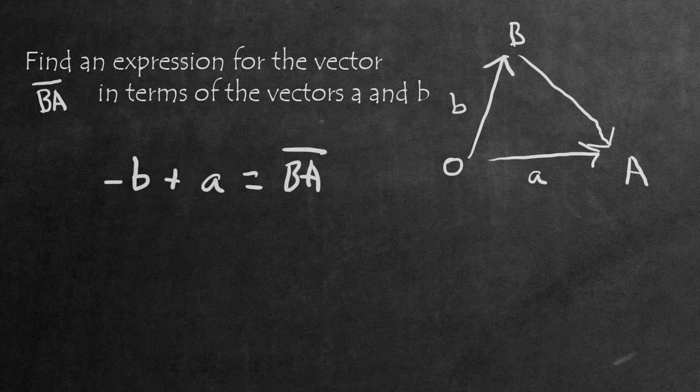This is the expression for this particular vector in terms of the other two vectors, a and b. Ideally, they would want you to write the positive vector first. So it would look like a minus b is equal to the other vector, BA.